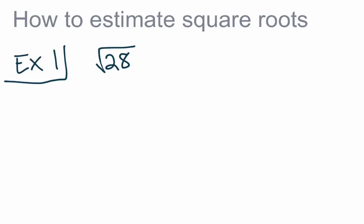What I want to do for the lesson is take a look at a couple examples and give you notes on what I'm doing as I go along. So if we're given a problem where we want to estimate the square root of 28 — 28 is not a perfect square, so we do not know what the square root of 28 is exactly equal to.